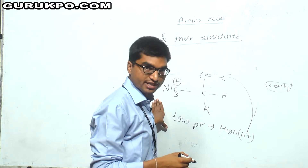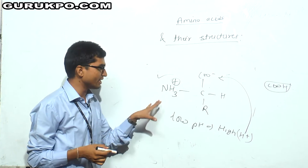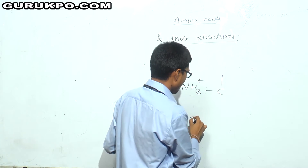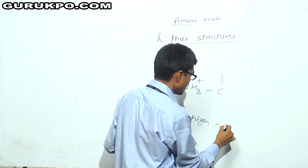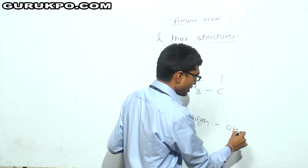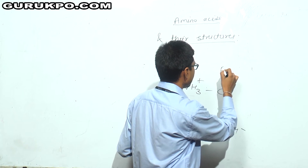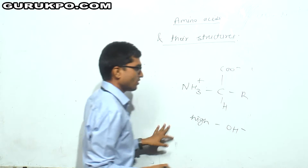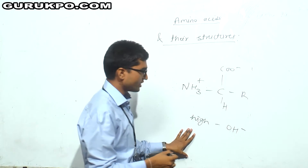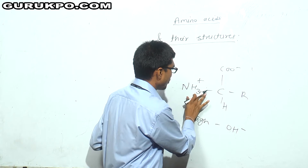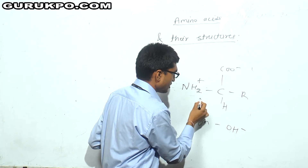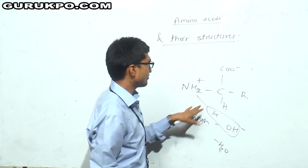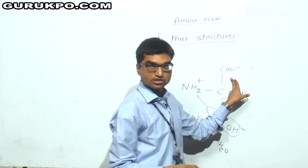In the presence of low pH, protein or amino acid will be having positive charge. In the presence of high pH, there will be high OH⁻ ion concentration, and this will form a water molecule — minus H2O — and the protein will be having negative charge.